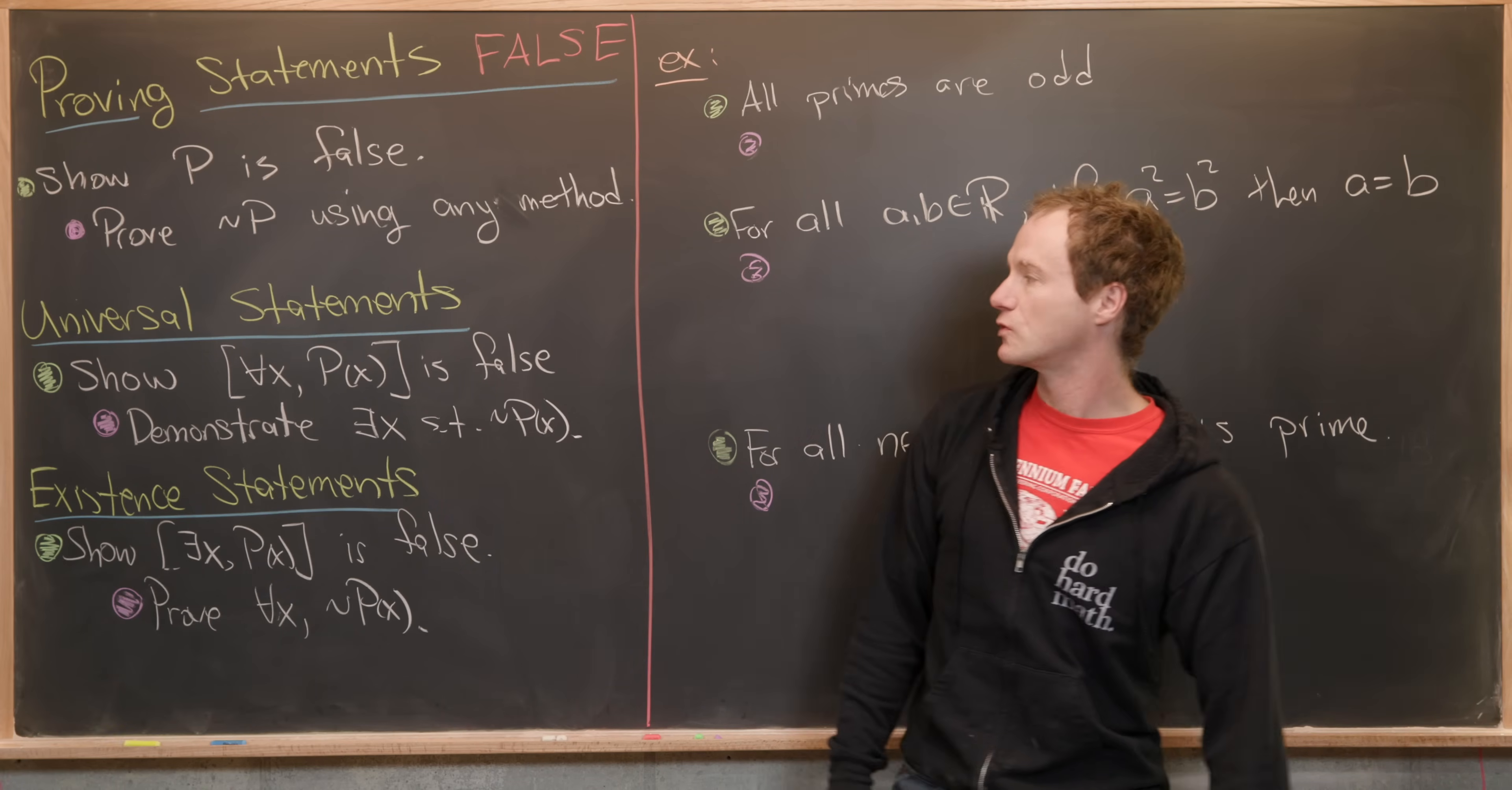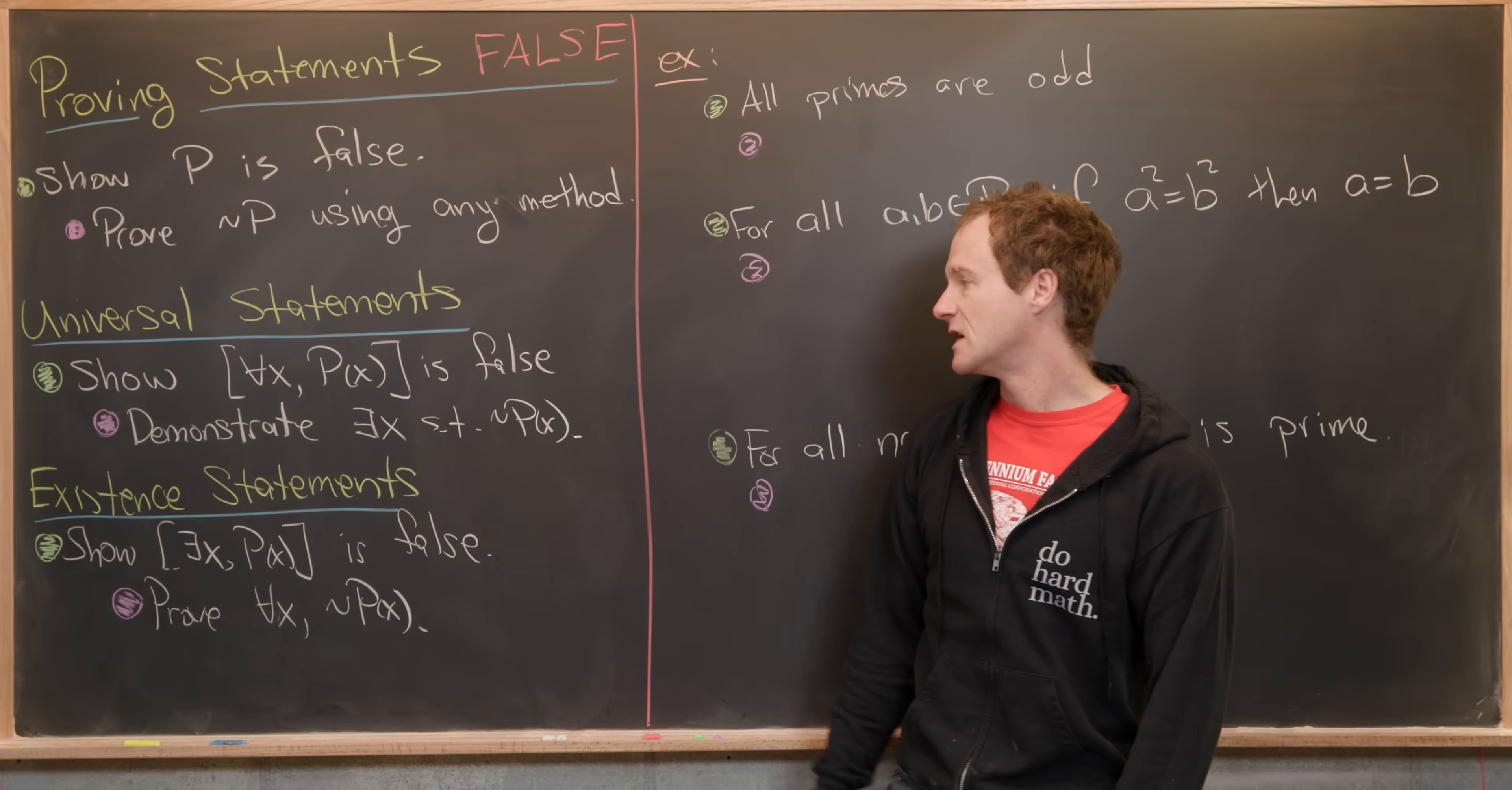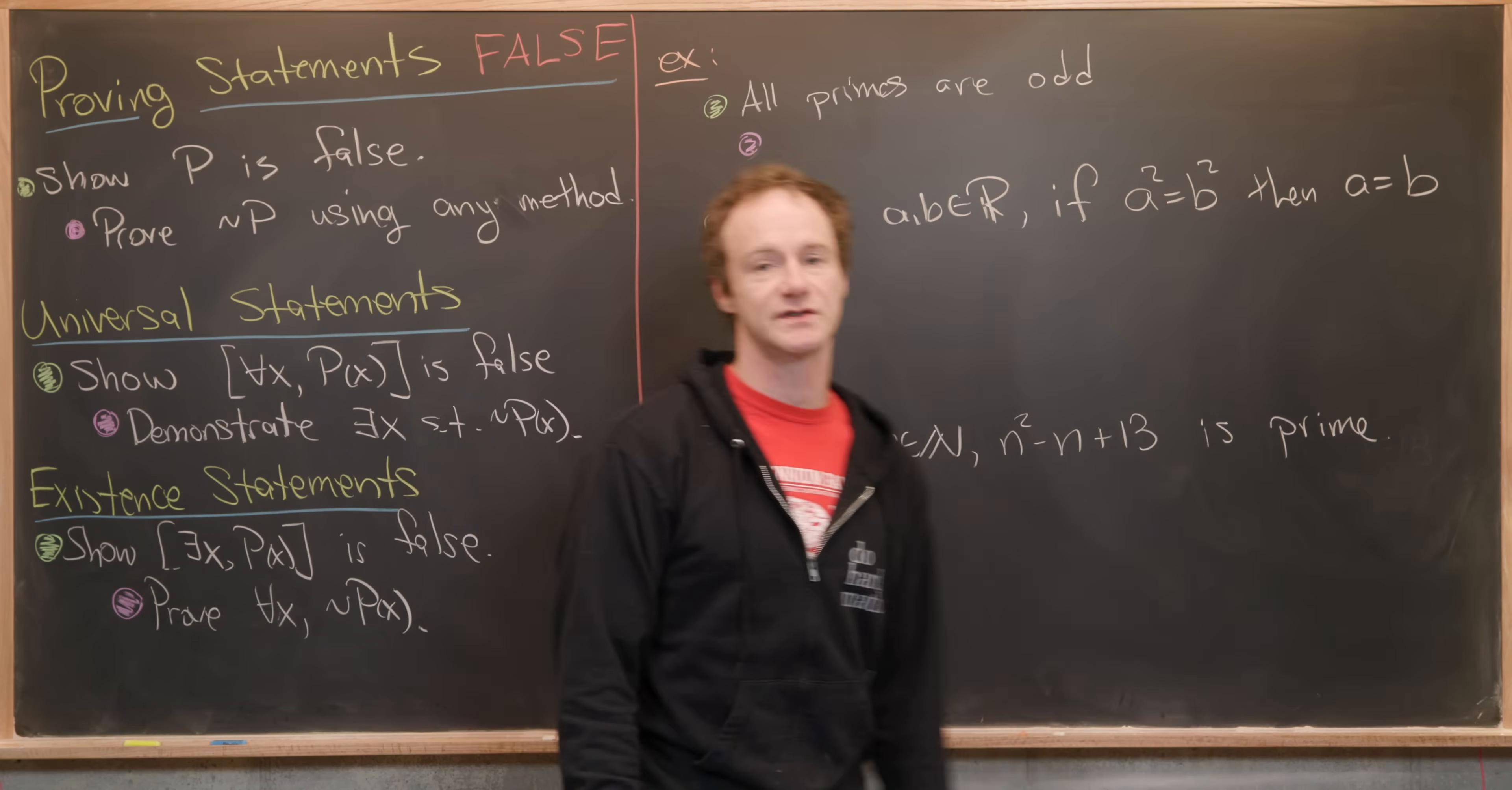Let's say we want to prove that a universal statement is false. Generally, a universal statement has the form for all X, P of X. In other words, for all X that satisfy a certain shape of object, P of X is a true mathematical statement. If we want to show that is false, then we need to demonstrate that there exists an X such that not P of X is true. The for all turned into there exists and the P turned into a not P. Let's look at some examples of disproving universal statements.